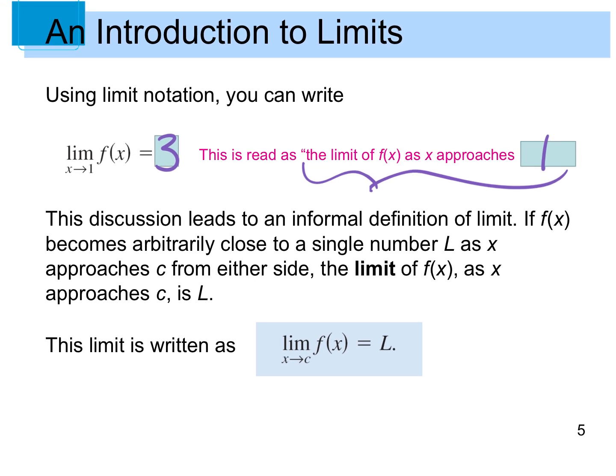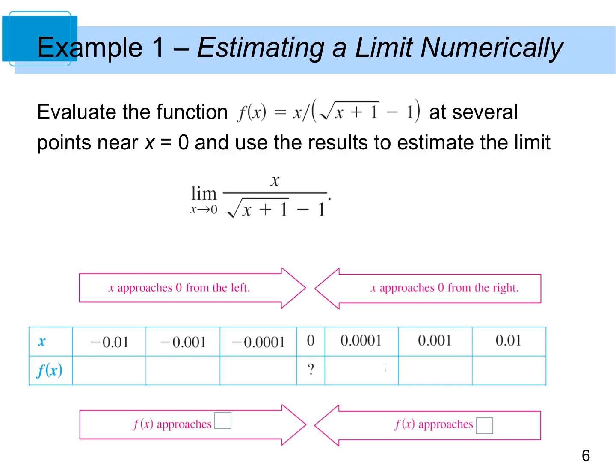The definition of a limit: as you get arbitrarily close to a single number, as x approaches that constant from either side, that value you're getting close to is your limit. We're talking about what our graph is getting close to — even though the graph didn't exist at this value, what is the value as we get really, really close to it? We're going to do the same thing in Example 1 — put the function into the calculator. The table settings should already be saved from before.